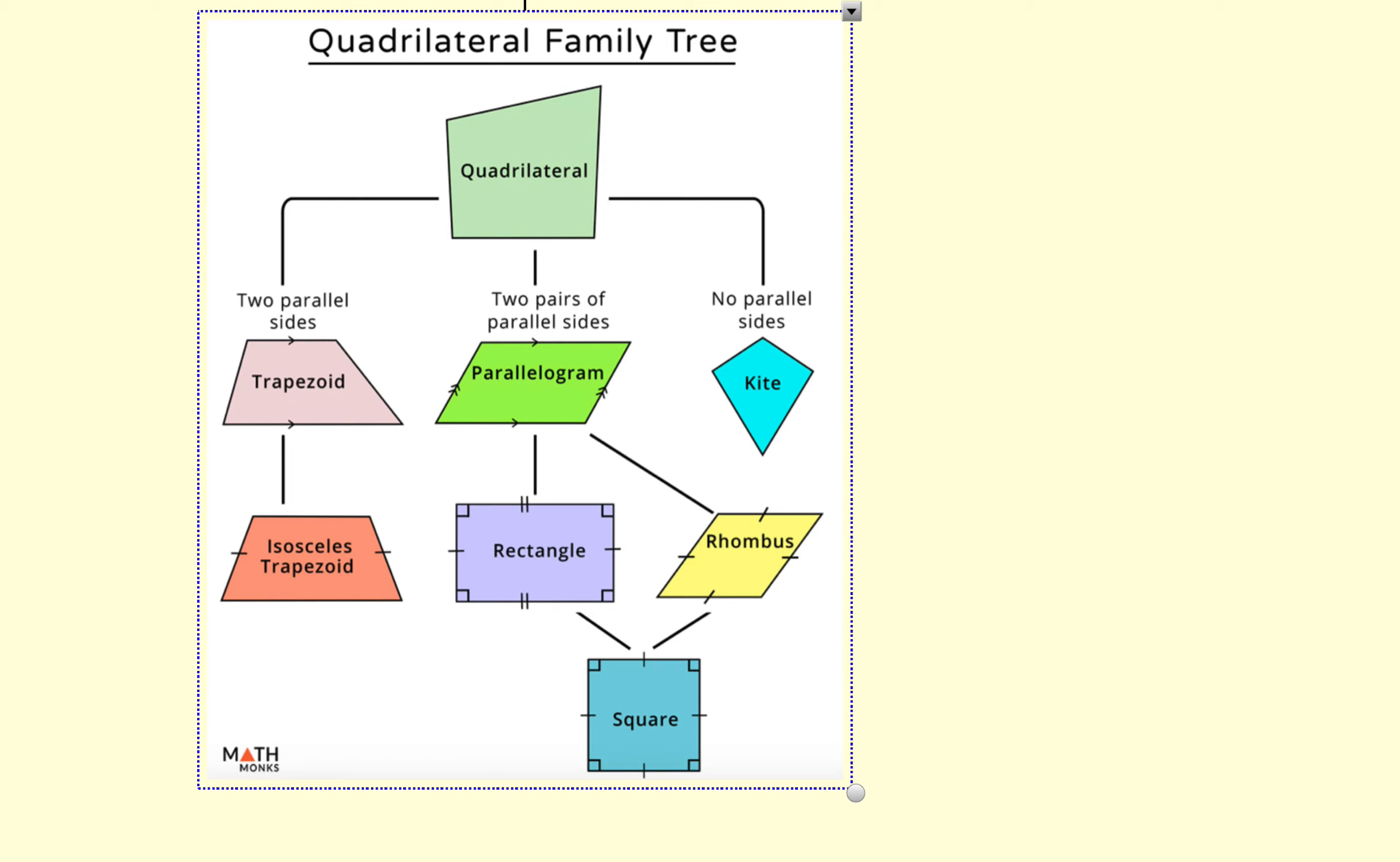Before we do that, let's take a look at the quadrilateral family tree, just so that you get an idea of what's happening. Quads are four-sided figures. We studied these special kinds, trapezoid and isosceles trapezoid. We also studied the kite.